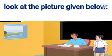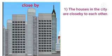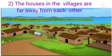Now children, look at some of the sentences given below. First, the houses in the city are close by to each other. So in the city, the houses, there are buildings or the houses are near to each other. Second, the houses in the villages are far away from each other. So in the village, the houses are far away. The distances are far.